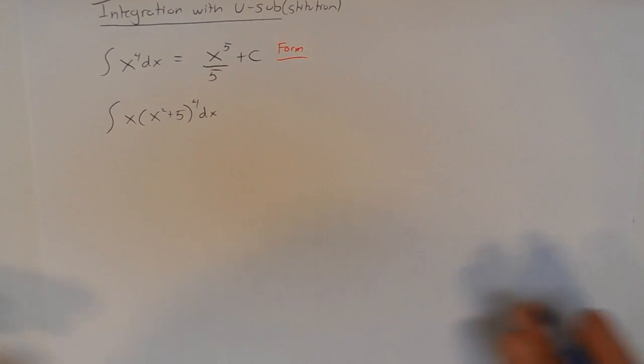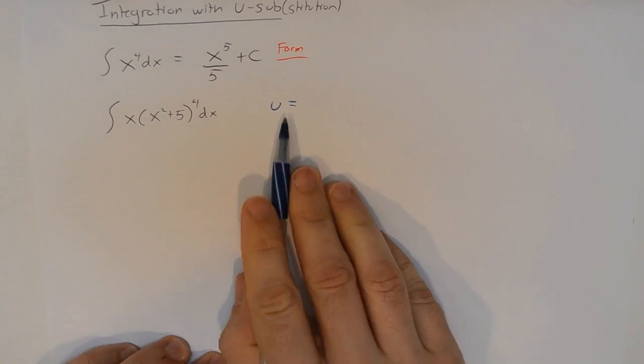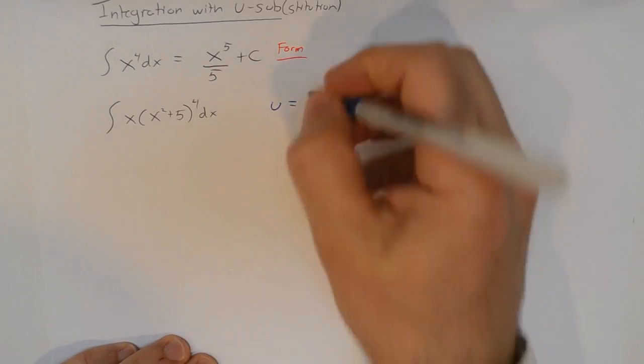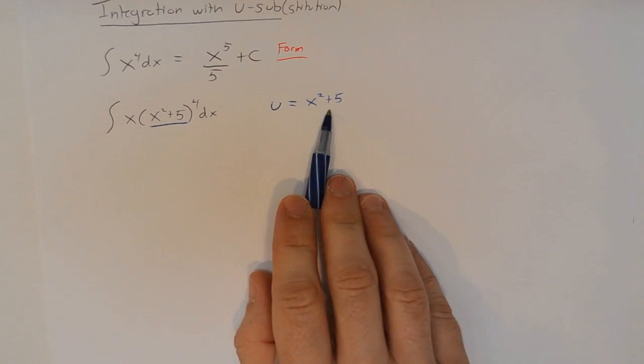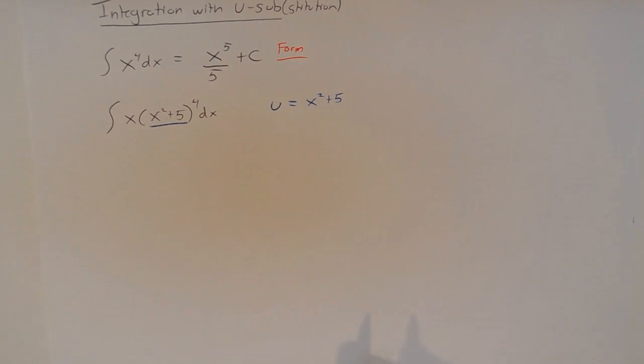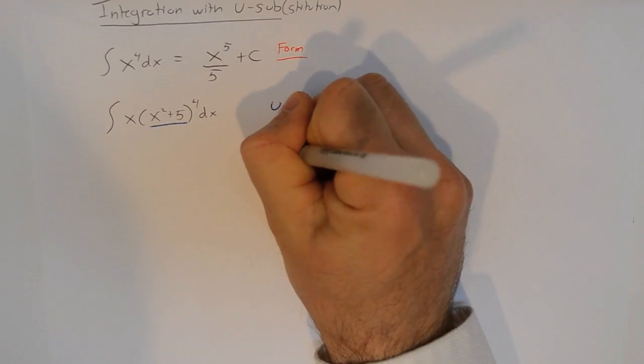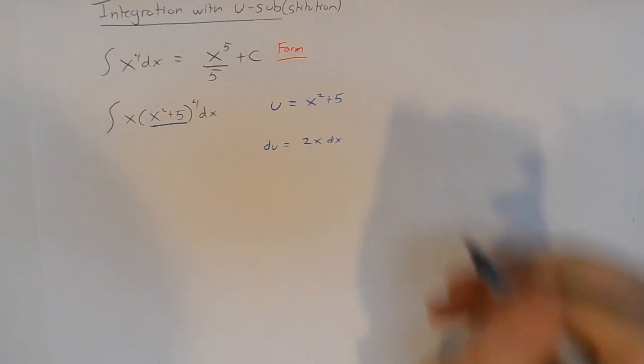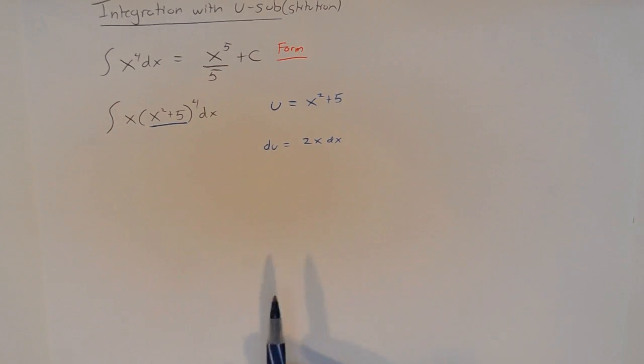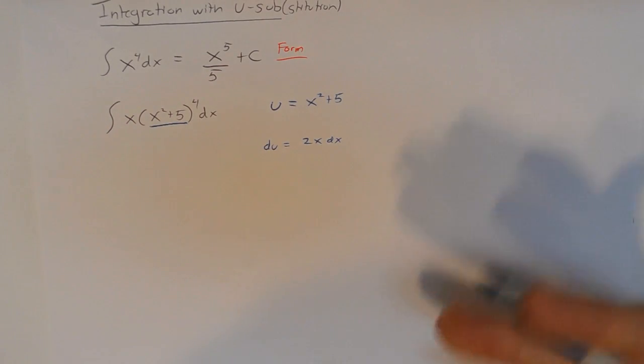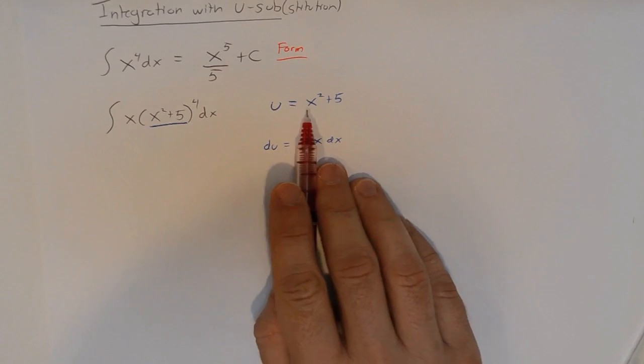What we do is create a variable. We usually use u, but you can use any letter at all. And I say, you know what, what if I had this variable u, which is going to be a function of x, and I let u equal x squared plus 5. So, I'm going to take this piece on the inside and let that equal my u. And then, what we do is we look at the derivative of u.